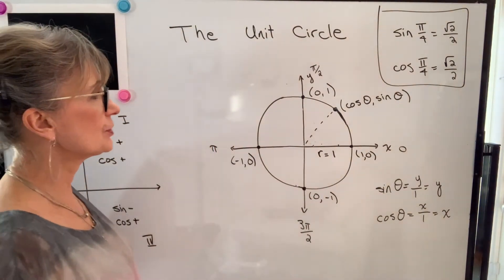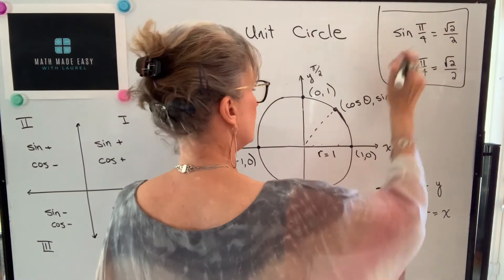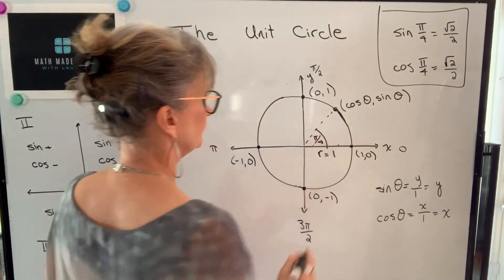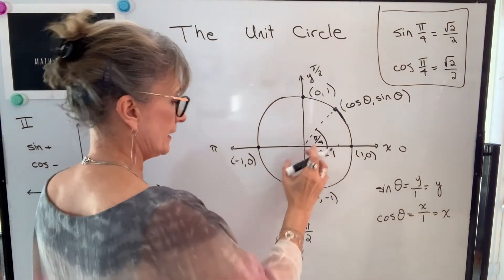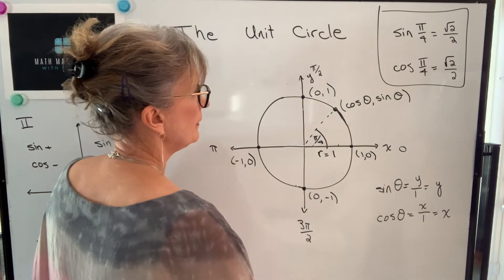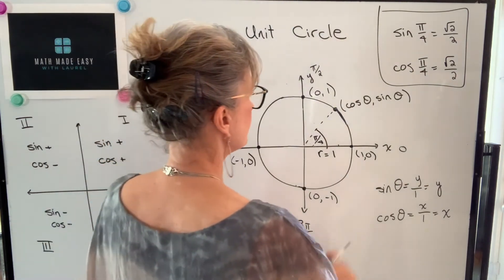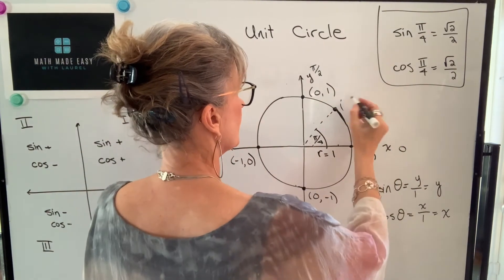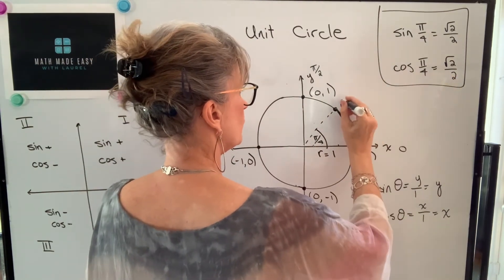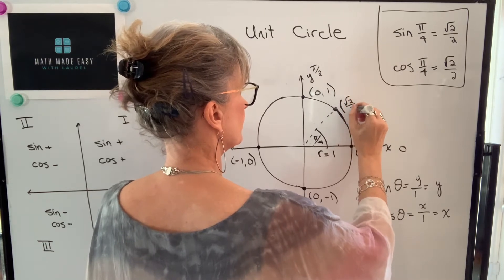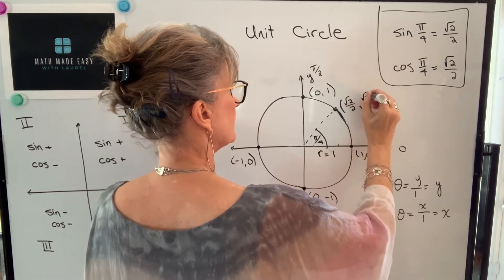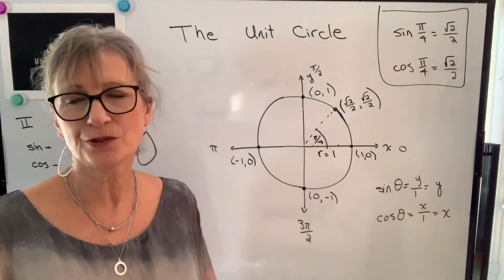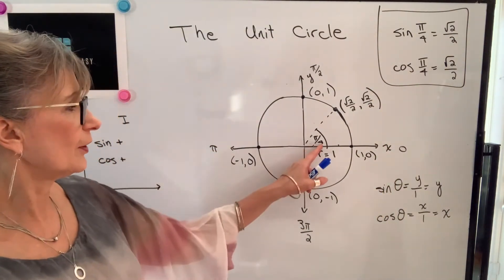So when we put coordinates on our unit circle, the first coordinate is x, which is equivalent to cos of theta, and the second coordinate is y, which is equivalent to sine of theta. For our angle of pi over four, our coordinates will be cos of pi over four, which is root two over two, and sine of pi over four, which is root two over two.